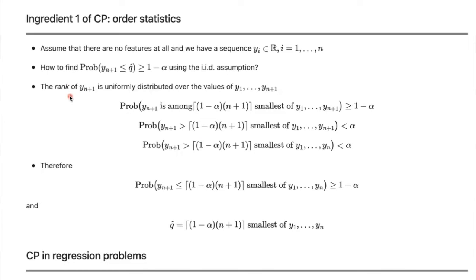The idea is that you divide your available data into two sets: one for training (D1) and one for calibration purposes (D2), with N1 and N2 data points respectively. Use D1 for model fitting, and D2 for finding residuals. We find residuals only for samples belonging to D2, then find the quantile of those residuals at the adjusted level ⌈(1−α)(N2+1)⌉/N2. Finally, we build the prediction interval as F-hat minus Q-hat (lower bound) to F-hat plus Q-hat (upper bound).